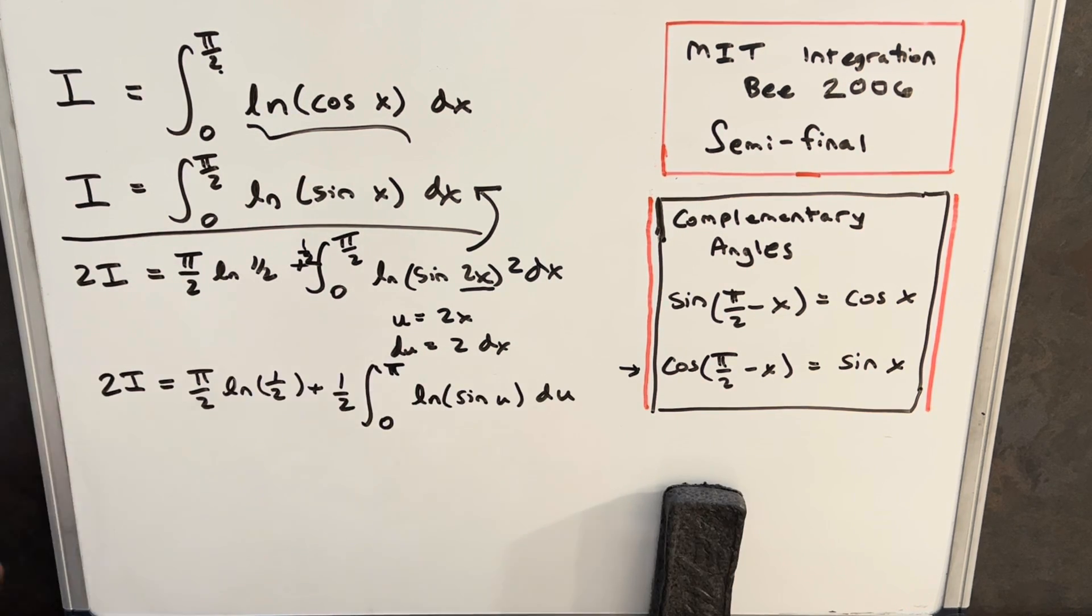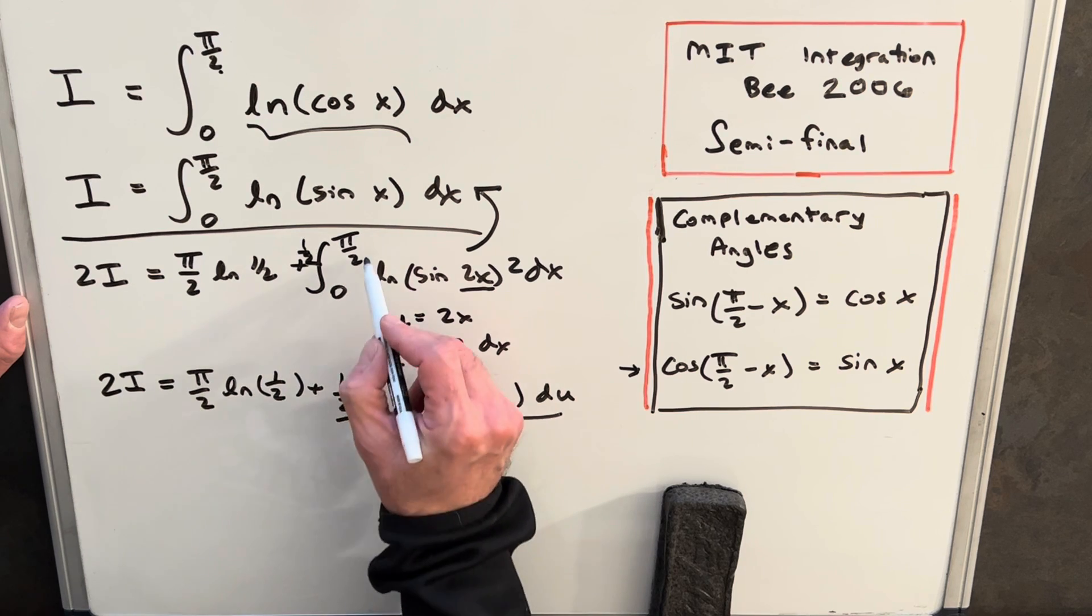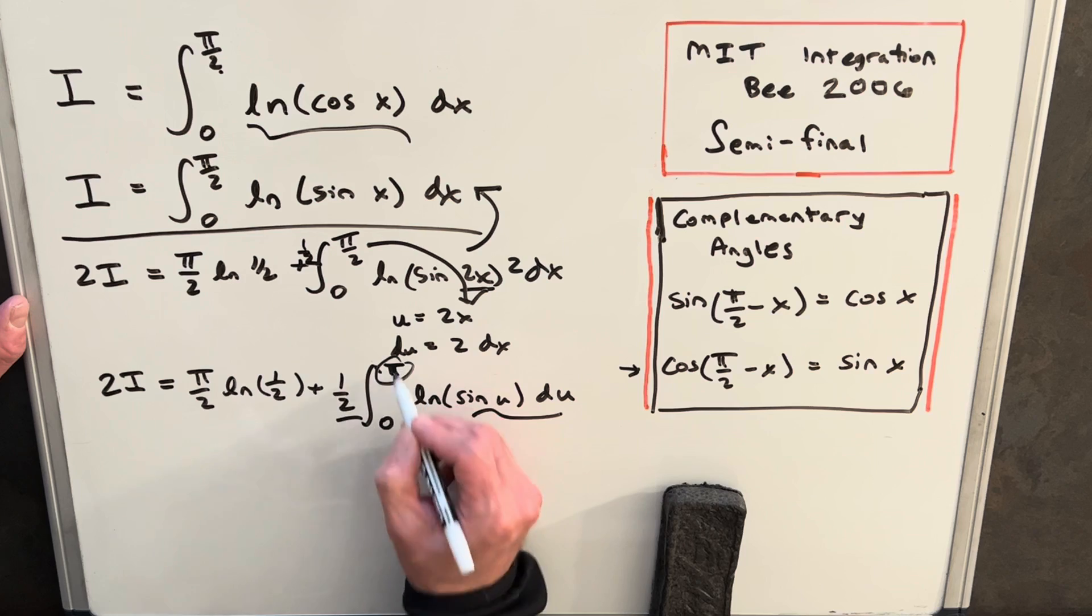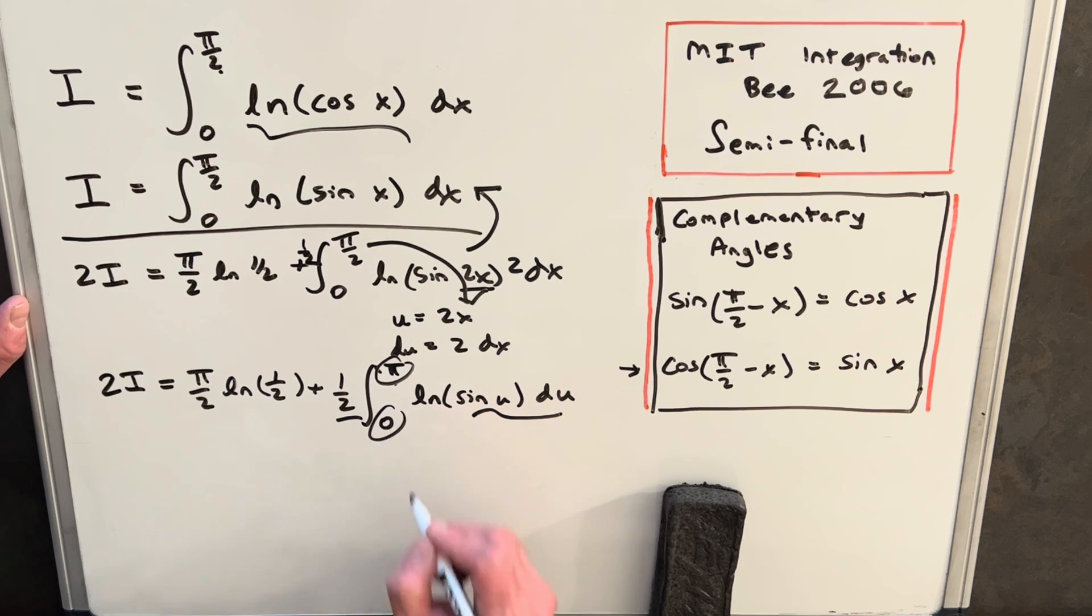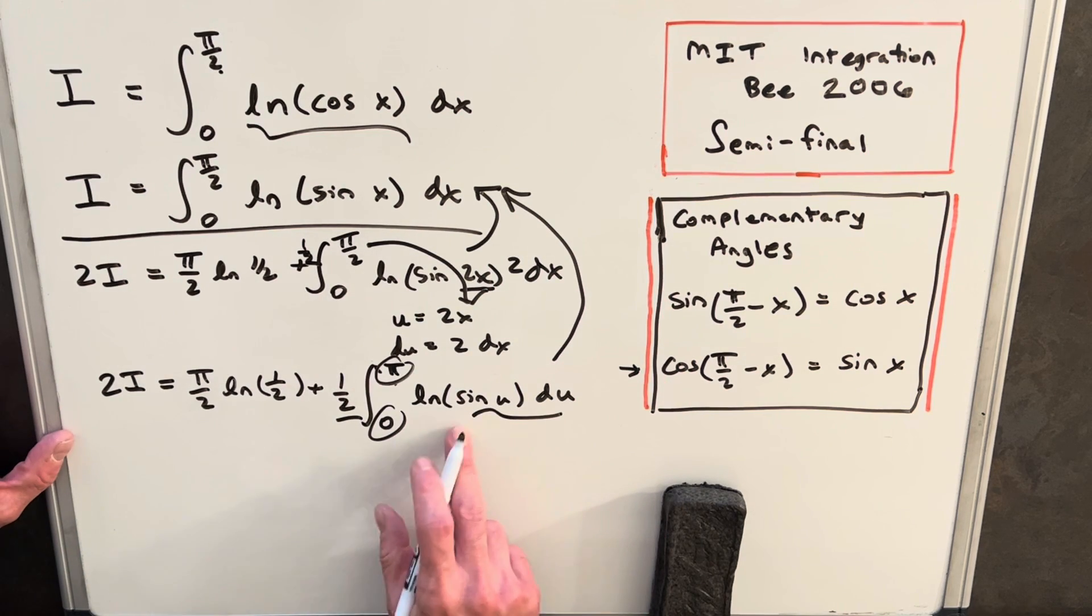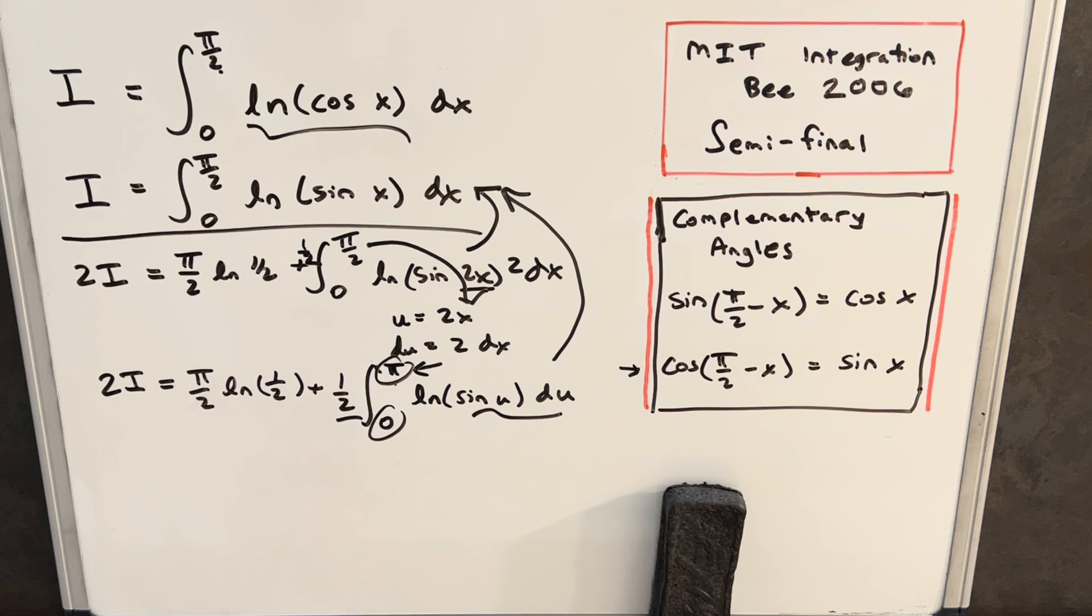Okay, so we did our simple substitution. Now we have this in terms of u, we have our half out front. One thing I should mention here, I updated the bounds of integration. We plug pi over 2 in for x, this term is now a pi, and this term is still a 0. So we're still aiming for this formula here. We're close because of our ln sine u, our problem here now is the bounds.